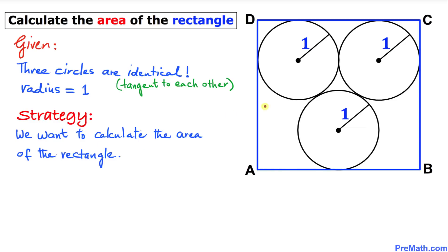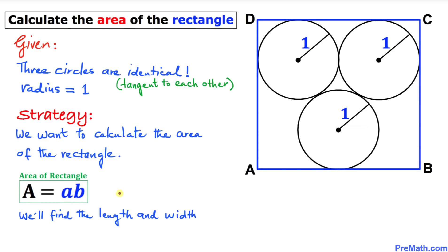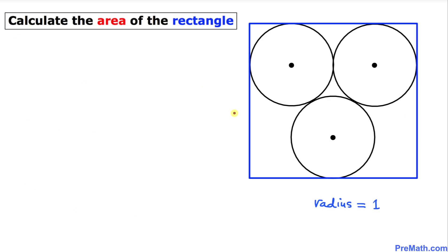Here is our action plan: we want to calculate the area of this rectangle, and we know the area of a rectangle formula is A = a × b, where a and b are the sides of the rectangle. Our task is therefore to calculate the length and the width of this rectangle.